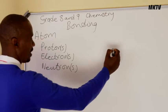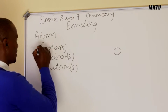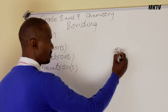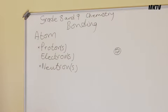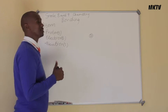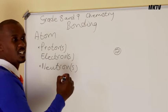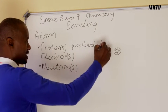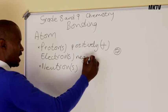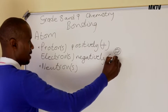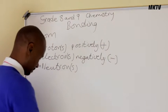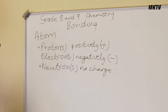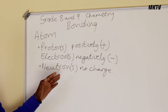In the nucleus we find the protons and neutrons. We write the small 'p' with a plus sign, because the plus shows the electronic charge — protons are positively charged. Electrons are negatively charged, which we show with a minus. Then we have the neutron, which has no charge. This is our subatomic structure of an atom.